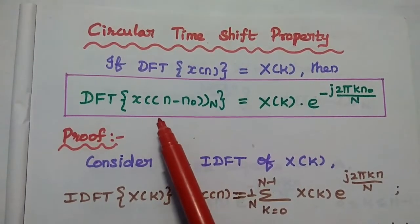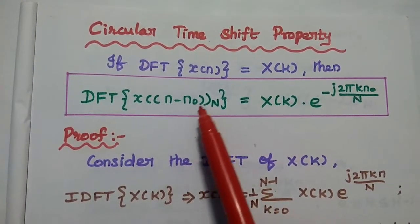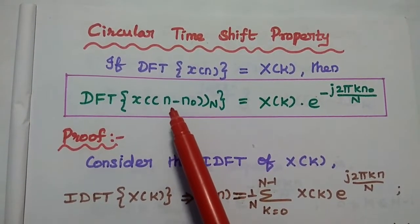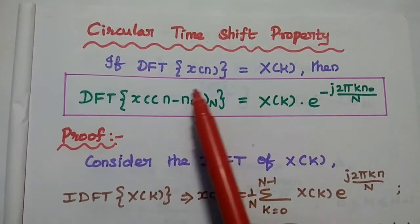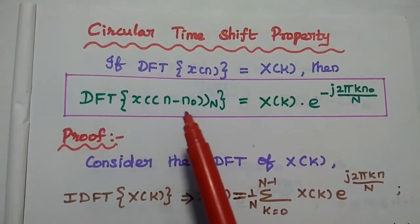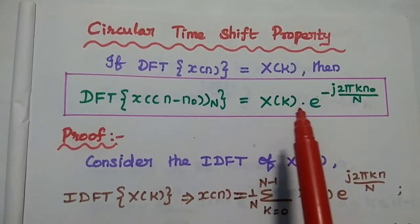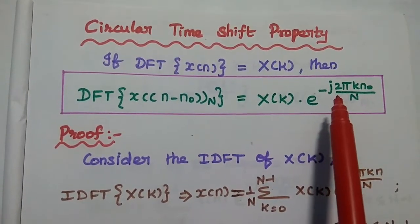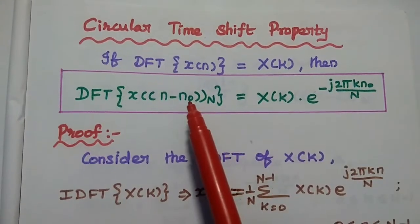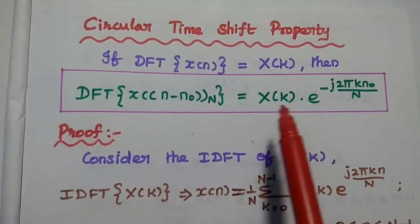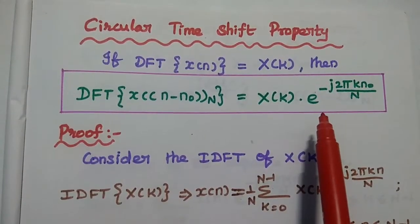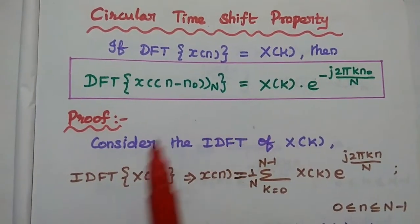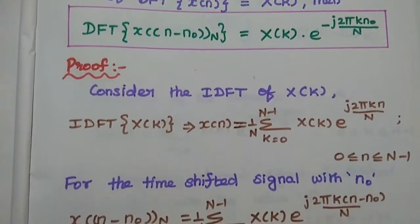The double bracket notation represents the circular shift, and N is the mod value — that is, the number of samples. We are shifting the signal x(n) to the right by n₀. For this time shifted signal, the frequency domain signal is multiplied with the exponential term e^(−j2πkn₀/N). This is called the circular time shift property of DFT.